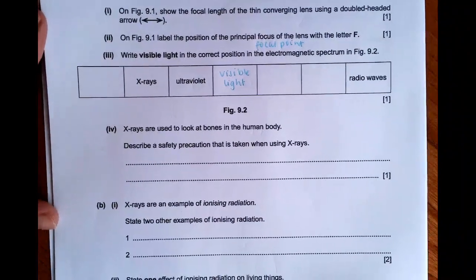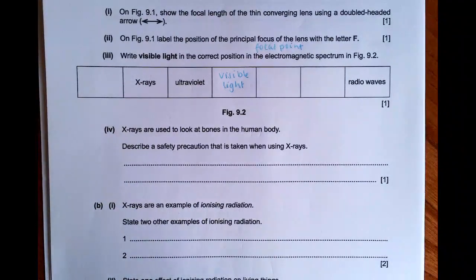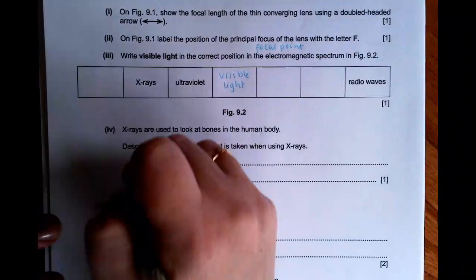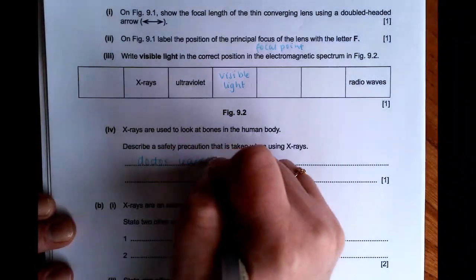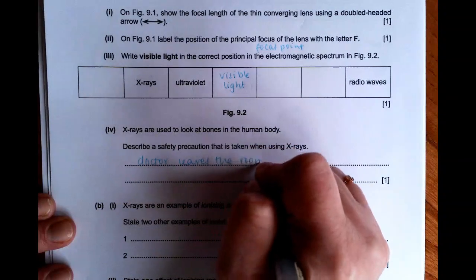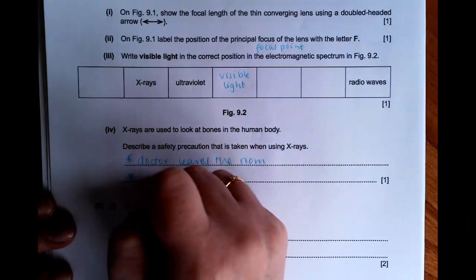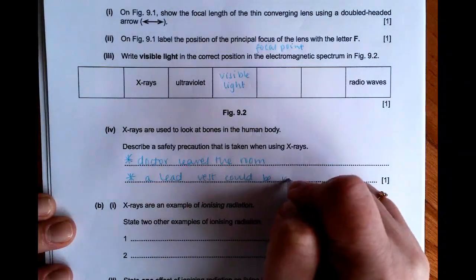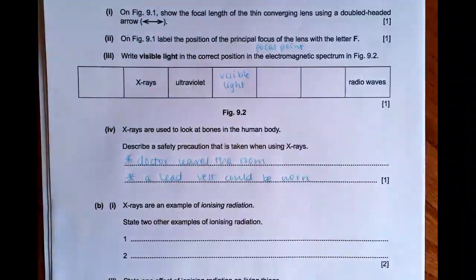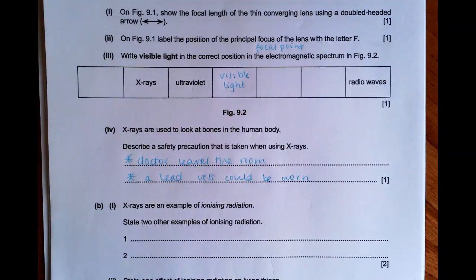So X-rays are used to look at bones in the body. What is a safety precaution we take when we're looking at ionising radiation? The doctor might leave the room before the image is taken, or a lead vest could be worn. So if you are having an X-ray on your leg, you might be asked to wear a lead vest over your torso so that your torso is protected.